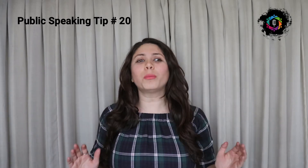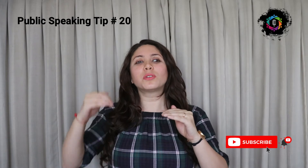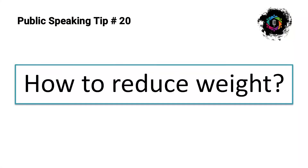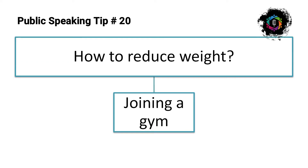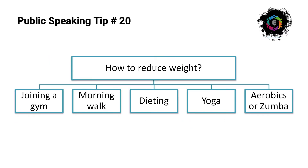I want to suggest three different techniques to help you identify your next speech topic — something unique and interesting. The first thought that comes to mind is always basic, general, and common — not interesting at all. You need to break it down into different levels. Our first technique is called Break Down. You are going to break down a topic into at least five or six levels. For example, starting with something like how to reduce weight or be healthy — very general and basic. Divide it into five levels: joining a gym, doing morning workouts, dieting, yoga, or aerobics and Zumba.